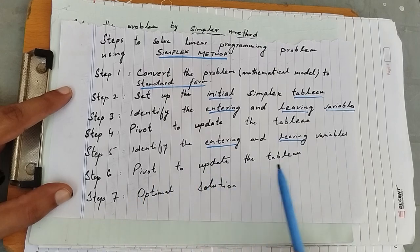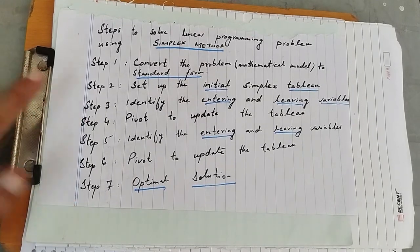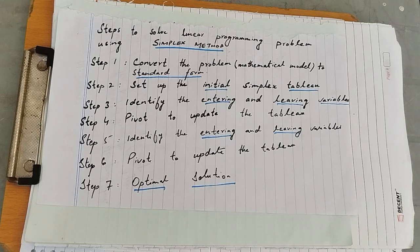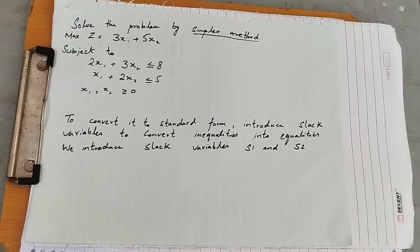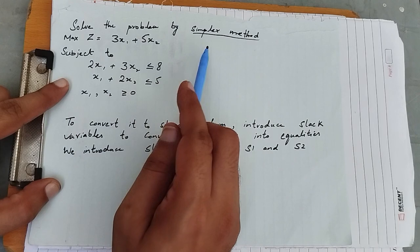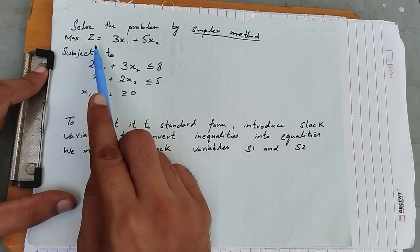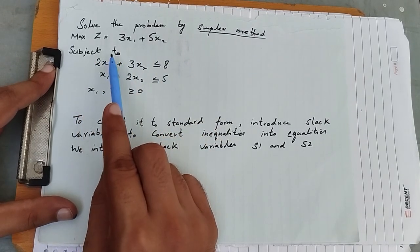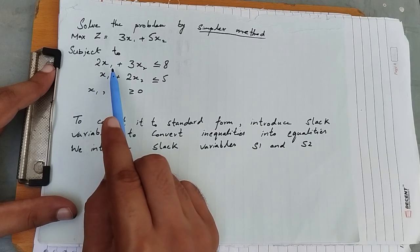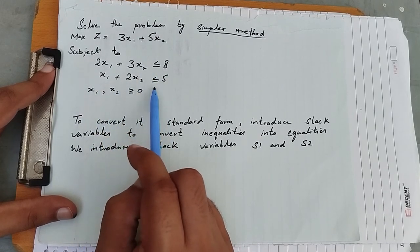We continue to update the tableau until we get the optimal solution. These are the steps we need to follow to solve a linear programming problem using the simplex method. Let's begin with the first question: solve the problem by the simplex method. It is a maximization problem — maximize z equals 3x₁ plus 5x₂.